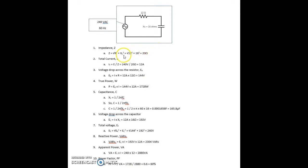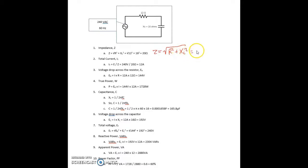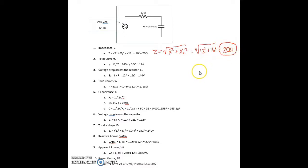The first one is impedance Z. This formula is out of the textbook: Z equals the square root of R squared plus Xc squared. So that's the square root of 12 squared plus 16 squared, and that gives an answer of 20 ohms for total impedance.